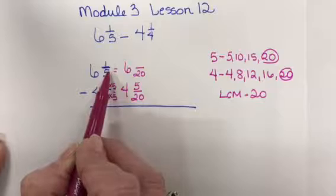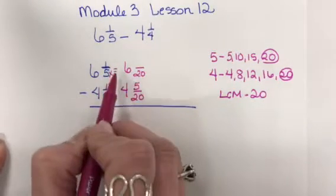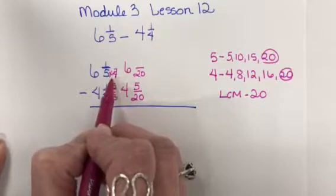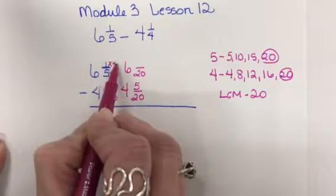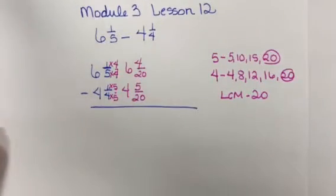I'll ask myself, what did I multiply 5 by to get to 20? It's 4. What I do to the denominator, I do to the numerator. 1 times 4 is 4. Now I have like denominators and can solve my problem.